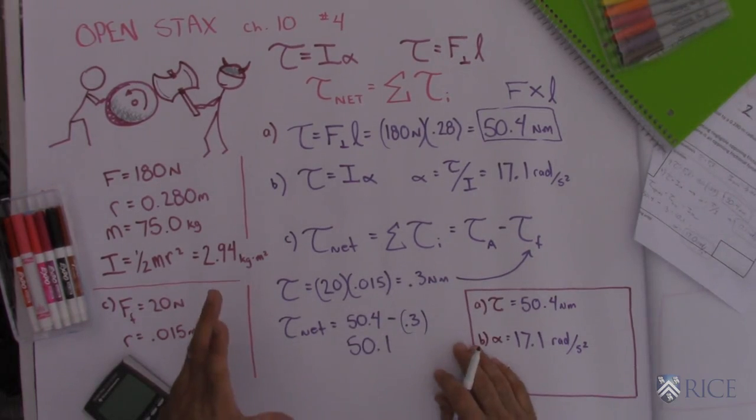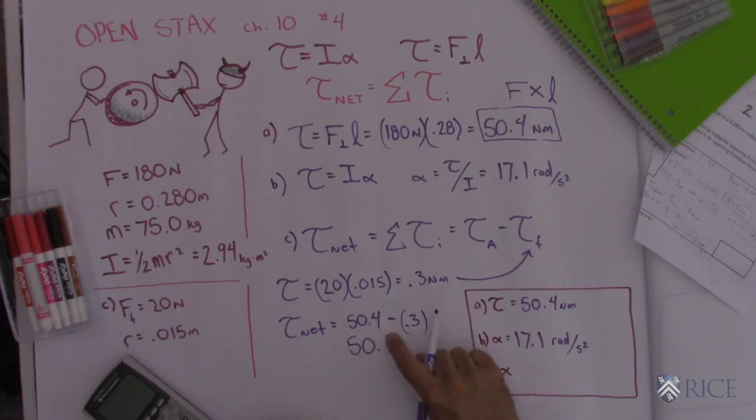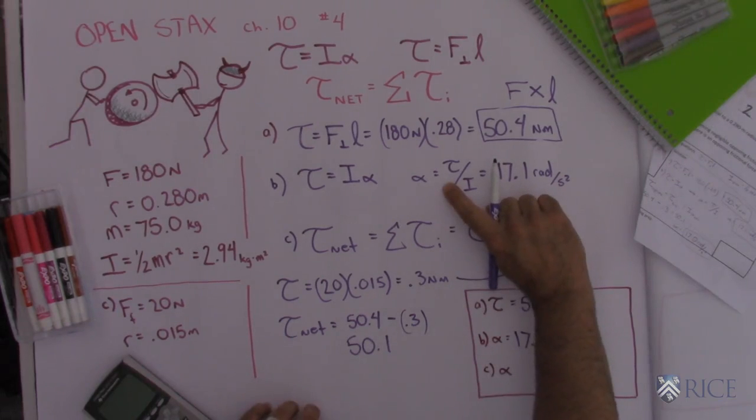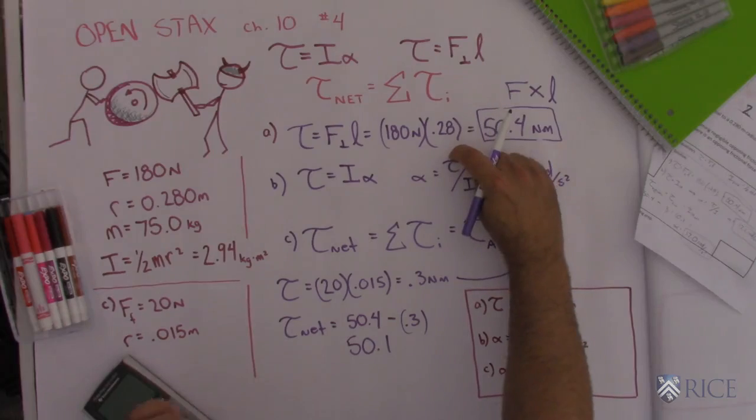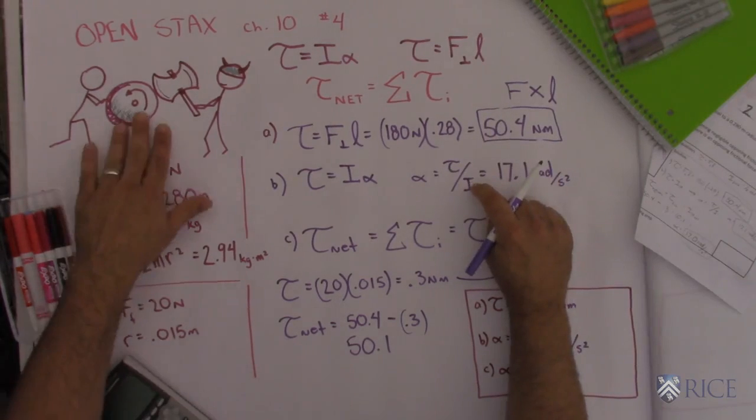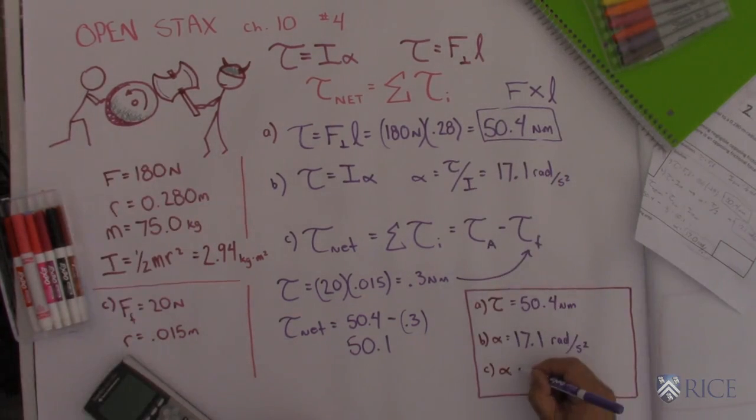I'm not done yet. I need to find the angular acceleration. So I just go back and that same formula that we used in part B to find angular acceleration, I take the torque and divide by moment of inertia. The only thing that's different is this time I take the net torque, which is a little bit less, and divide by the same moment of inertia. And that's going to give me an angular acceleration of 17.0 radians per second squared.